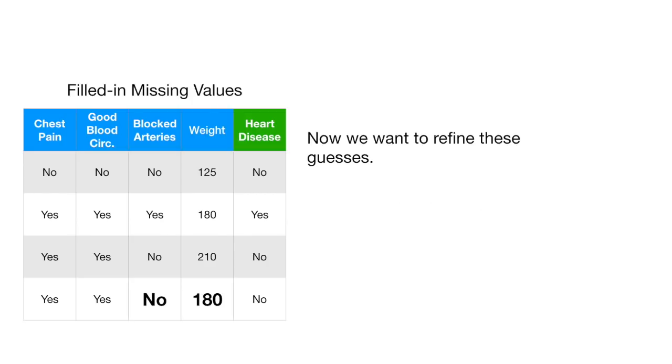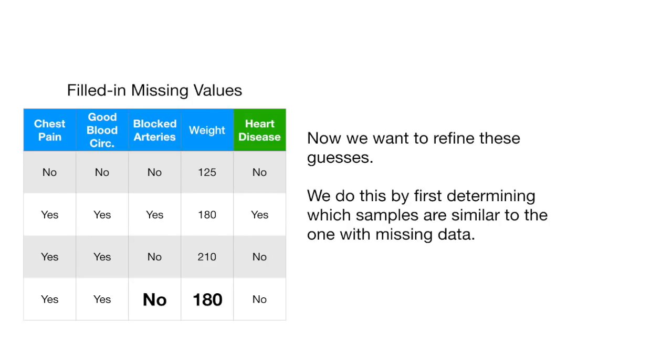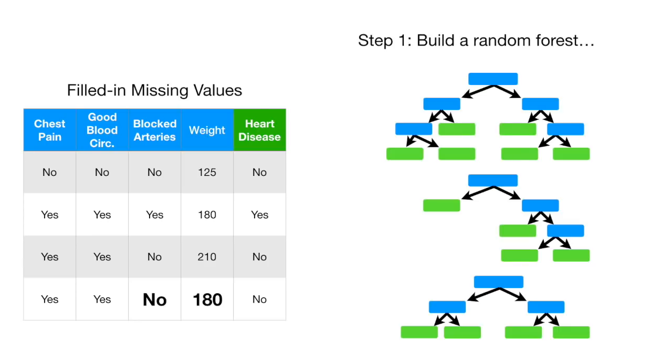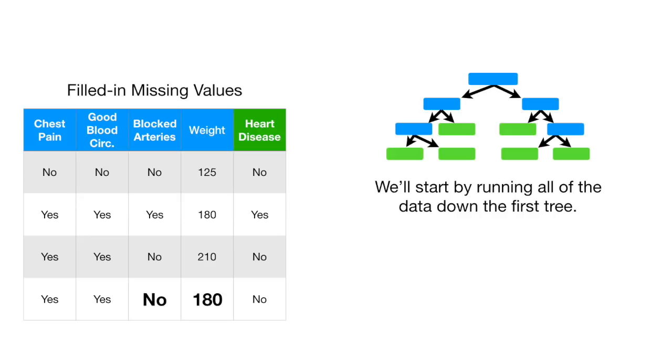Now we want to refine these guesses. We do this by first determining which samples are similar to the one with missing data. So let's talk about how to determine similarity. Step one, build a random forest. Step two, run all of the data down all of the trees. We'll start by running all of the data down the first tree.